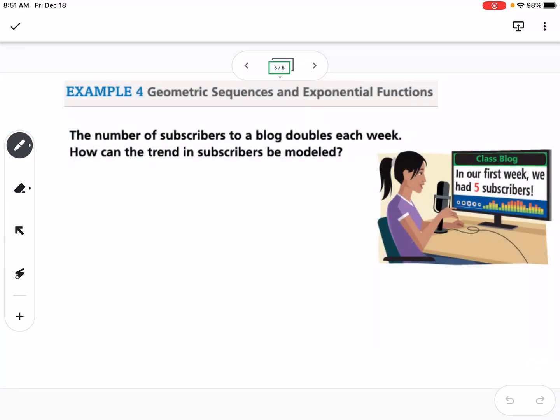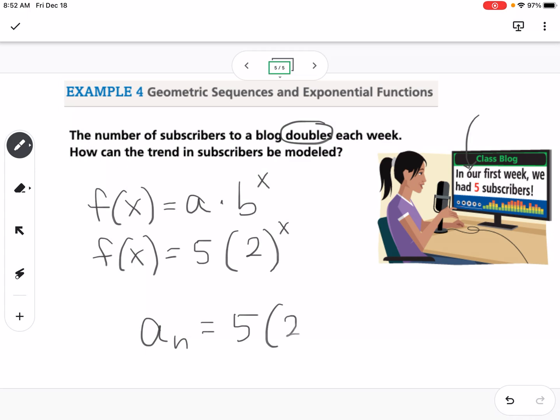Our last example is modeling. The number of subscribers to a blog doubles each week. How can the trend in subscribers be modeled? Our first week we had 5 subscribers. If we think back to our function, it's a times b to the x. We could write this as 5. When it's doubling, we're multiplying by 2 each week, so 5 times 2 to the x. As a geometric sequence, we could say an equals 5 times 2 to the n minus 1. That's the connection between those.